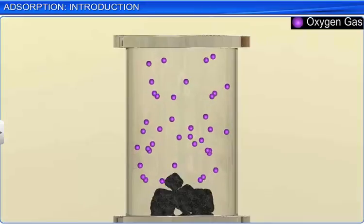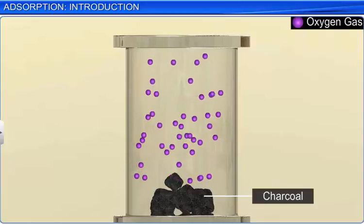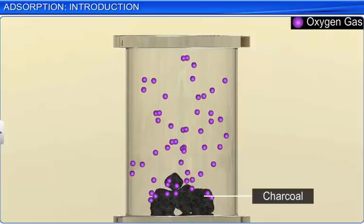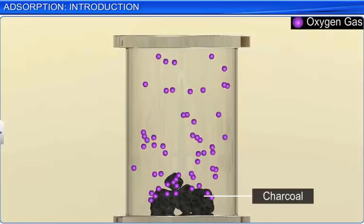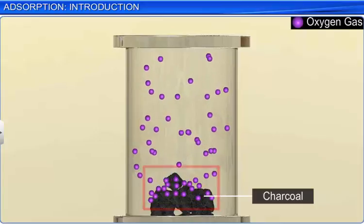If you put solid charcoal in a closed vessel containing oxygen, you observe that oxygen molecules are attracted to the solid surface of charcoal. As a result, the concentration of the gas on the surface of the solid increases.